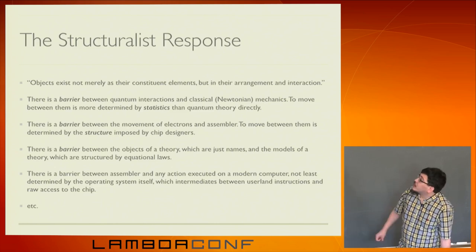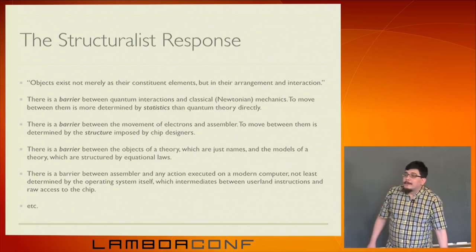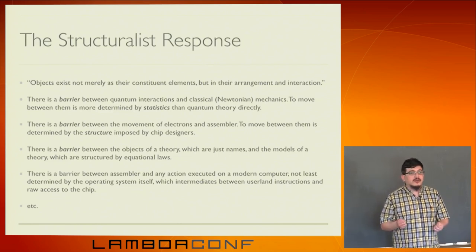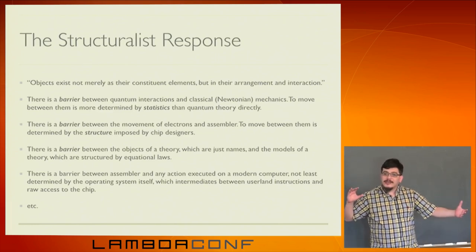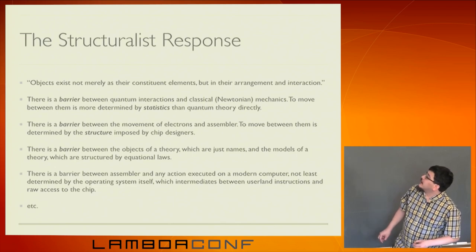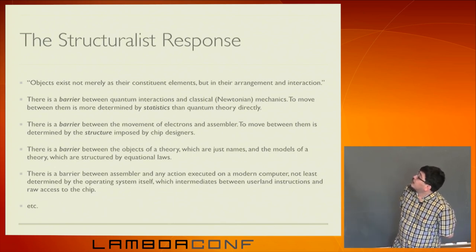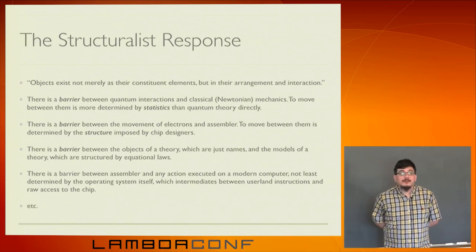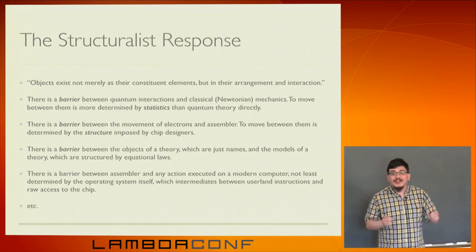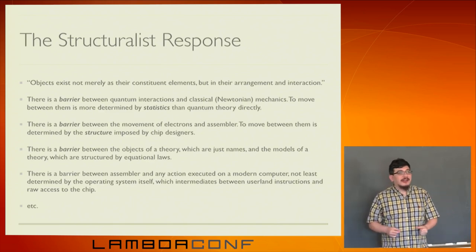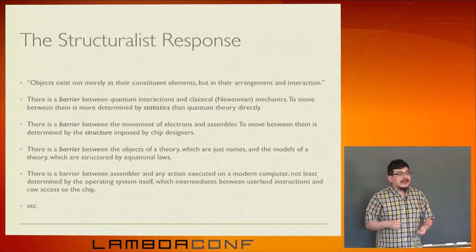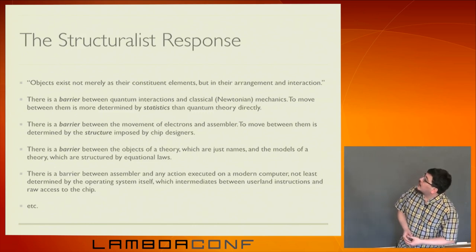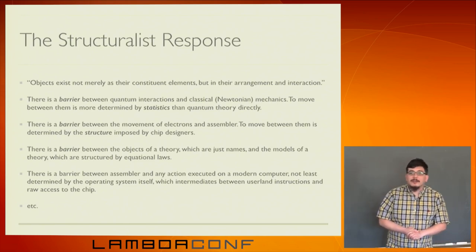There are many physical examples. In the quantum and classical worlds, the transition is statistical, and you don't understand the classical world in terms of Hilbert state spaces — you pass into a different thing. The structure of the quantum interactions is what's important, not the individual ones. Similarly, in computer chips: the movement of electrons versus assembler language. Close to the metal as we would call it is very different from the actual metal of the electrons. The electrons sometimes don't even stay exactly on the paths. You don't think about that — and that's a structural phenomenon. The objects of a theory are just names; the model of a theory is structured by equational laws.